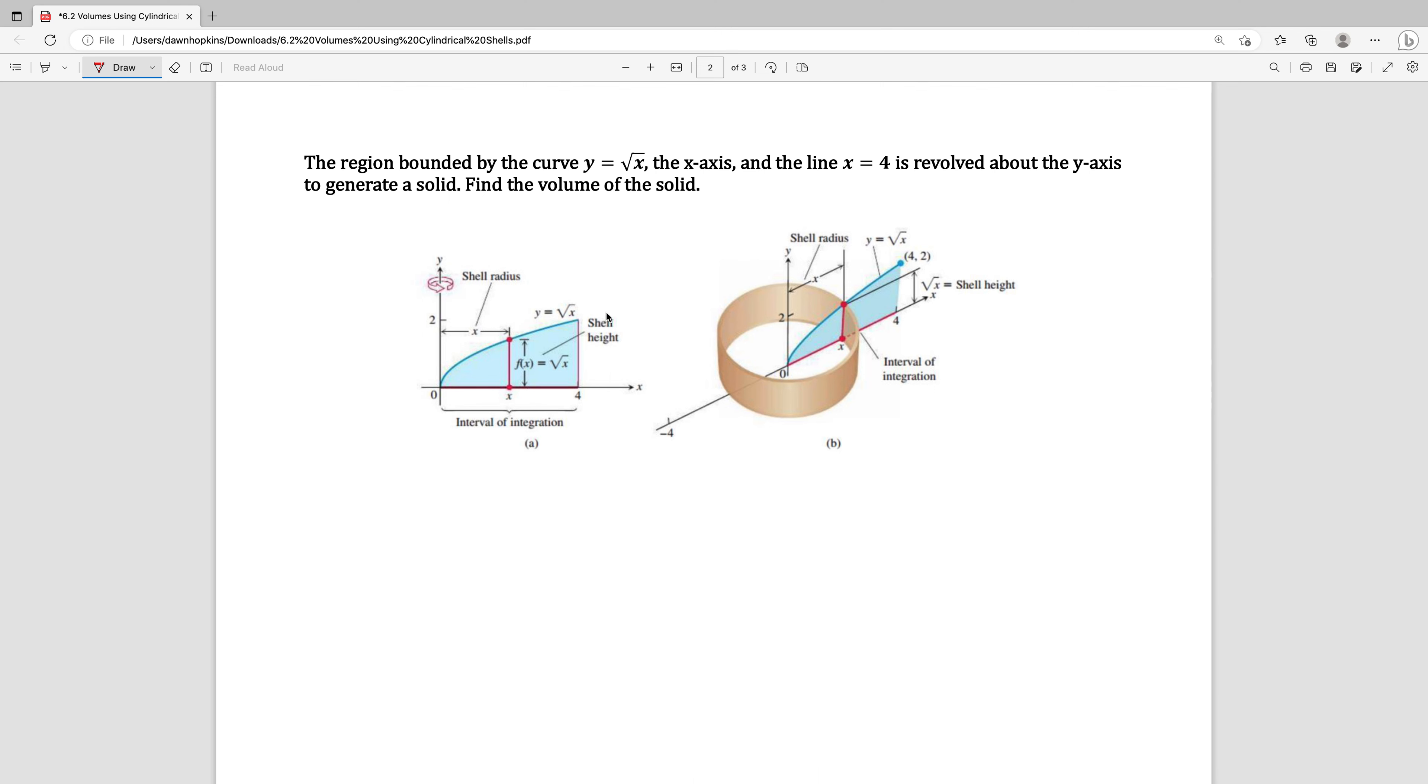So the volume formula here, we're going to be integrating from X equals 0 to X equals 4. It's 2 pi times the radius times the height.